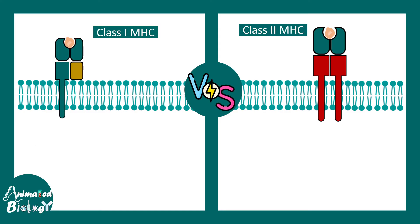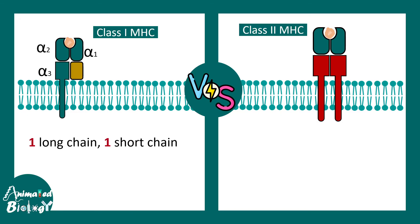Class 1 MHC molecule has one long chain and one short chain. The long chain contains alpha 1, alpha 2, and alpha 3 segments. The short chain is basically the beta-2 microglobulin.